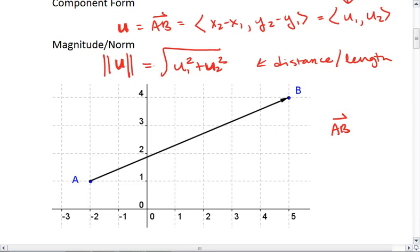Which means A is our initial point. A is at negative 2, 1. And B is at 5, 4.